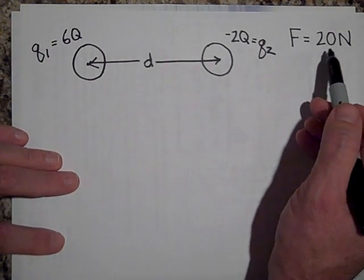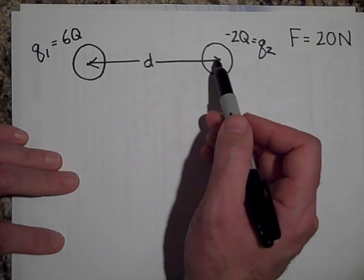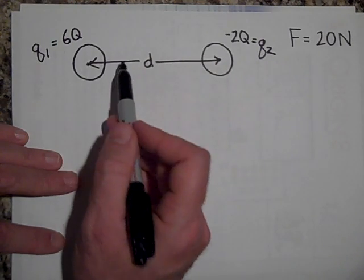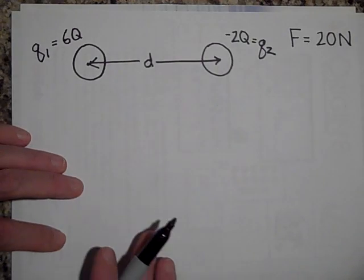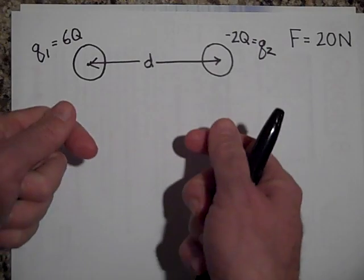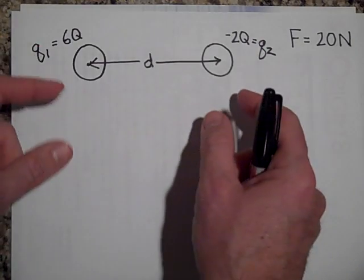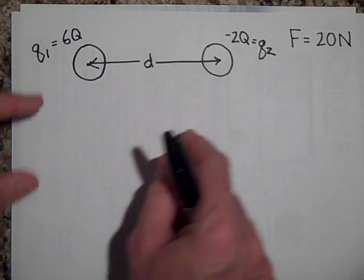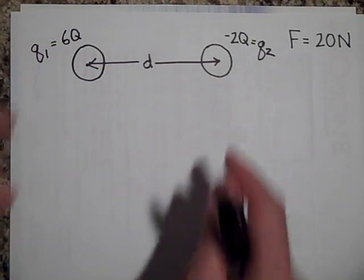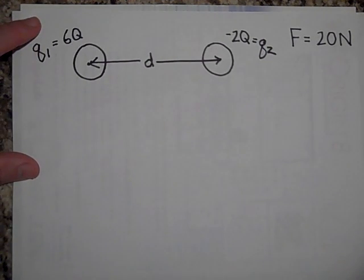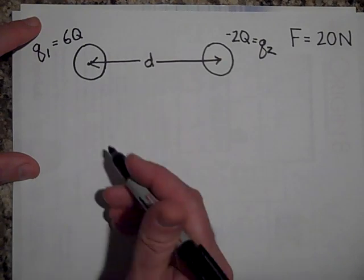They have 20 Newtons of force between them. There's a force on this, this way of 20 Newtons, and a force this way of 20 Newtons. Could you tell me if I brought these together without, maybe with some insulating gloves or something and touch them. Now, remember the metal spheres. If I touch them and then separated them back to a distance D, could you tell me what the new charge would be on each of them? Let's just do that first.